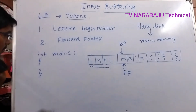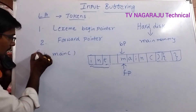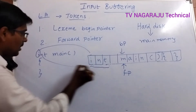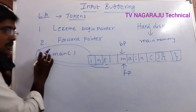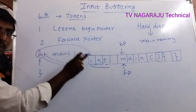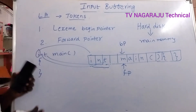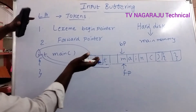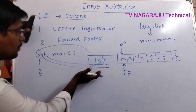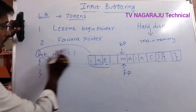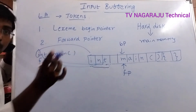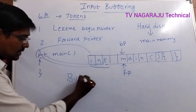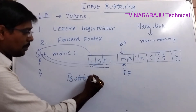Here is the problem: reading character by character — I, N, T — requires a very large number of system calls. To overcome this problem of many system calls from reading character by character, we use the concept of buffering.